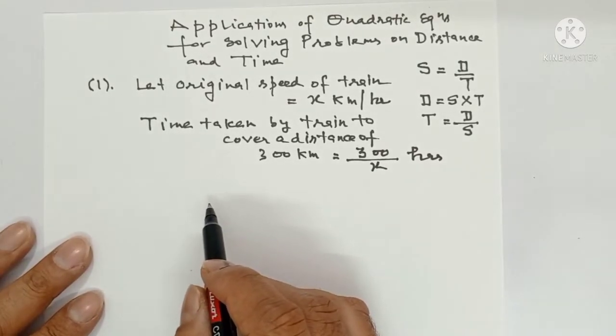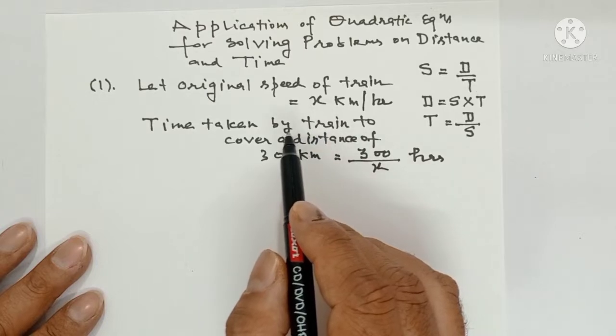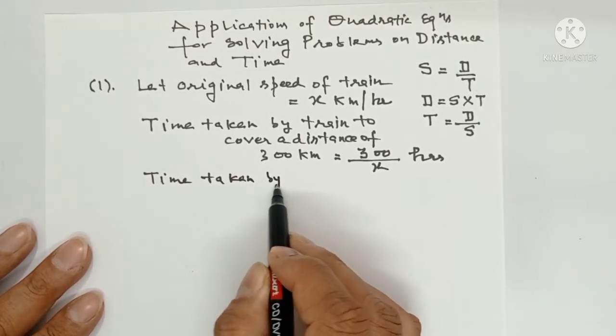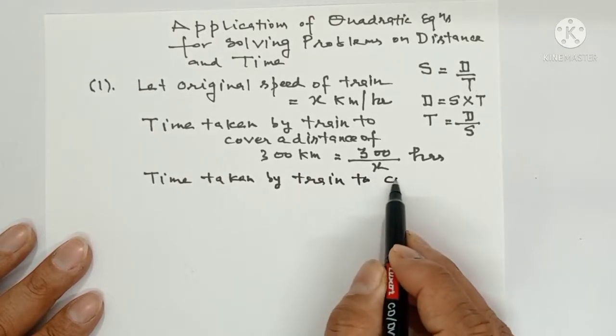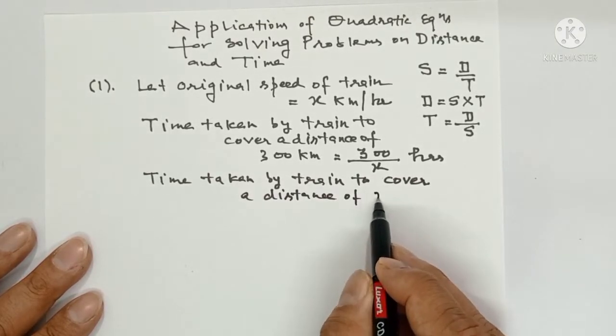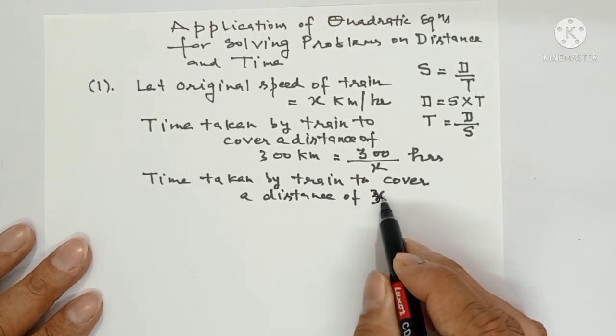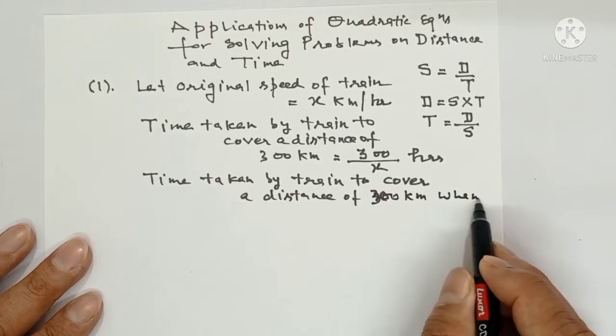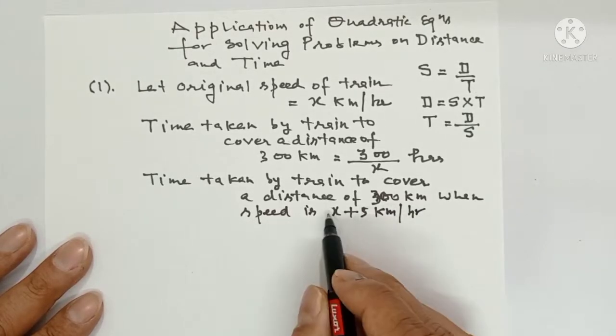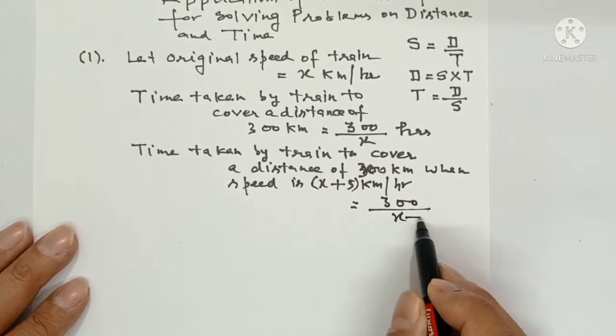Now, it is written that speed was increased by 5 km per hour. So earlier speed was x km per hour, now it is increased by 5 km per hour. So time will also be different. Time taken by train to cover a distance of 300 km when speed is x plus 5 km per hour is 300 upon x plus 5 hours.